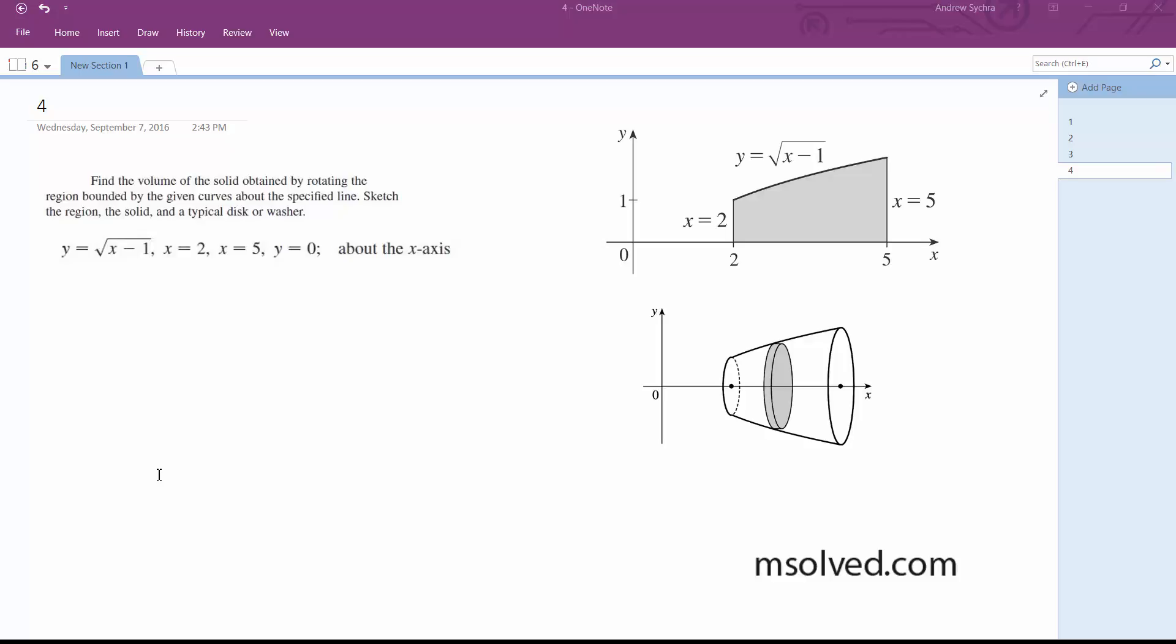we go from 2 to 5, pi times, and then we have square root of x minus 1 squared, because that's the equivalent of the radius for that given point.